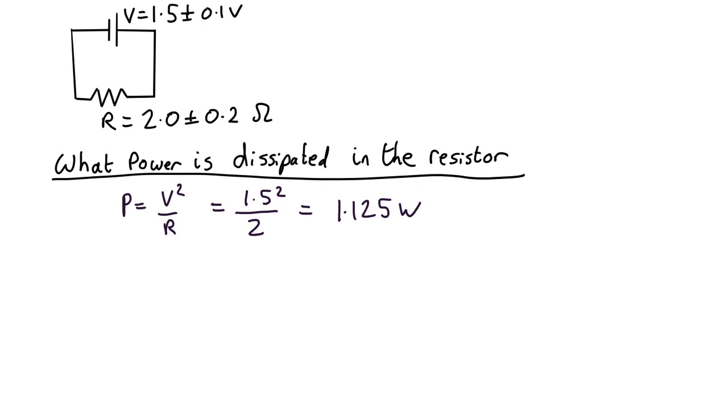So we can use the equations for combining uncertainties. Now in this case we've got a squared and an R. So we're going to need two different things. We're going to need to do the squared first. And the equation for that if a equals b to the n, the equation is sigma a over a equals n sigma b over b. So this is the fractional uncertainty in whatever you're raising to a power times the power equals the fractional uncertainty here.